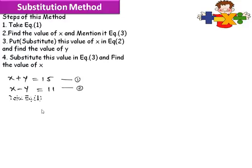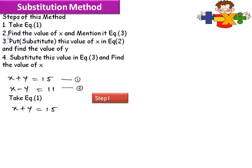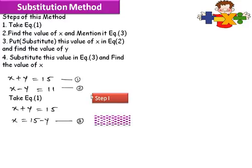Take equation 1. Write equation 1 first: x plus y is equal to 15. Second step — find the value of x and mention it as equation 3. We need to get x from here, so we move positive y to the other side. We get x is equal to 15 minus y. This is equation 3.